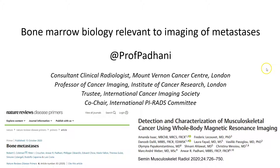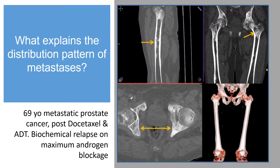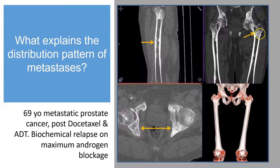Hello everybody. Over the next few minutes we will discuss bone marrow biology that is relevant to the imaging of bone metastases. Let's start with a case. Here's a 69 year old man with metastatic disease to the bone marrow. We see disease in the pelvic bone marrow, in the proximal metaphyses, and on the endosteal surface of the femoral shafts. What explains this disease pattern?